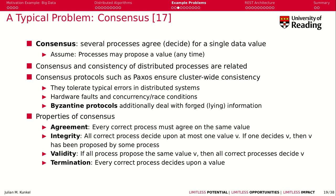Let's look a bit more at the typical problem of consensus. In this problem, several processes must agree or decide on a single data value — it could be my age, my name, or something more complicated. We assume that any process, including an external process, may propose a value at any time. So we get different inputs: the value should be 5, the value should be 7, the value should be 10. But at the end, you want to decide on a common value.